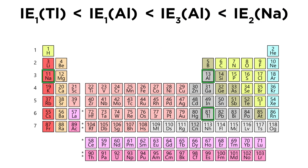As it turns out, the processes were already listed in the correct order: IE1 thallium < IE1 aluminum < IE3 aluminum < IE2 sodium. That is the order for this trend.